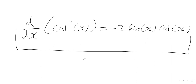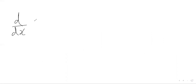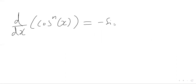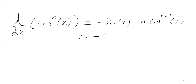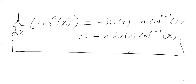Similarly to the previous video, we can generalize this result if we have a power of n instead. So if we differentiate cos x all to the power of n with respect to x: we differentiate the cos to get negative sine x, then differentiate the power of n function with respect to cos, giving us n times cos to the power of n minus one. Simplifying, we get negative n sine x times cos to the power of n minus one of x.